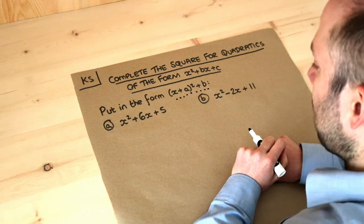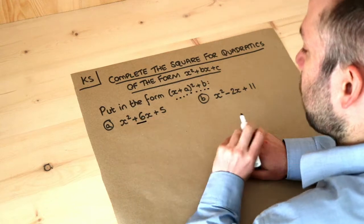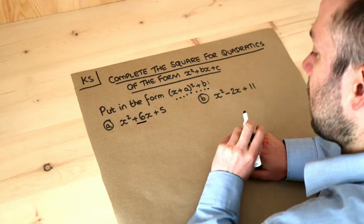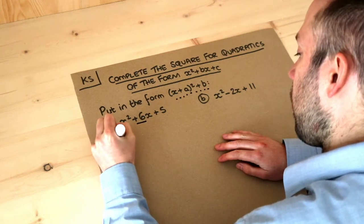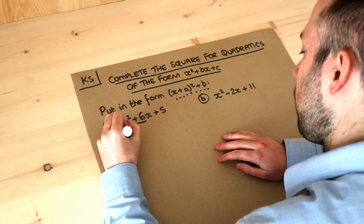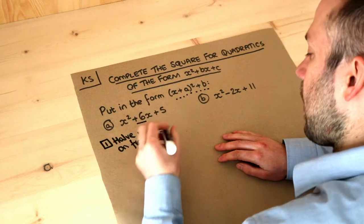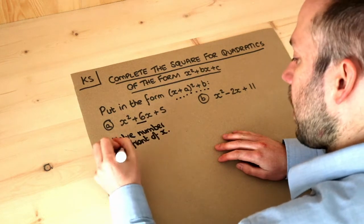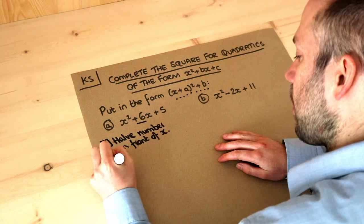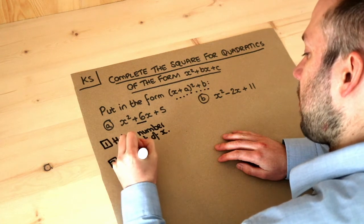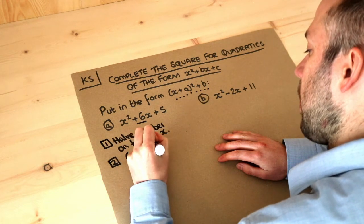Let me explain the method. Whatever the number is in front of the x, we halve it. So step one: halve the number in front of the x, known as the coefficient of x. And then we put that into x plus whatever that number is, all squared.